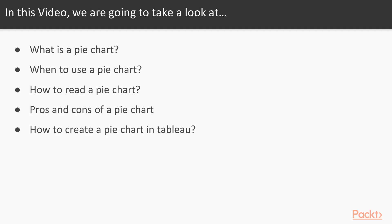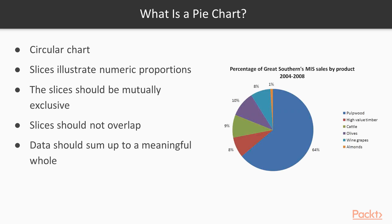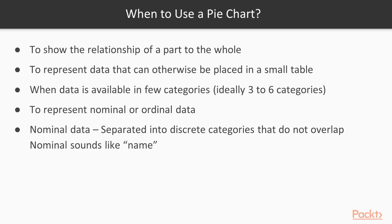What is a pie chart? A pie chart is also sometimes referred to as a circular chart. It is divided into slices or wedge-like sectors that illustrate numeric proportions. The slices should be mutually exclusive; they should not overlap. The data should sum up to a meaningful whole. When to use a pie chart: pie charts should be used to show the relationship of a part to the whole.